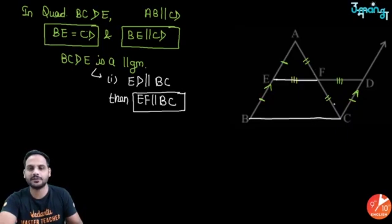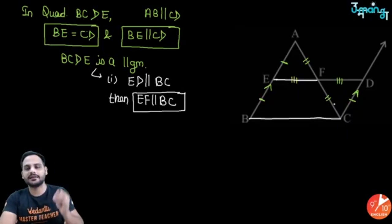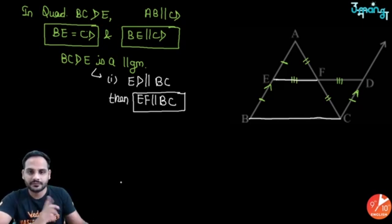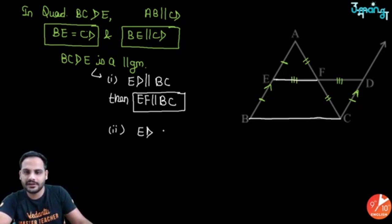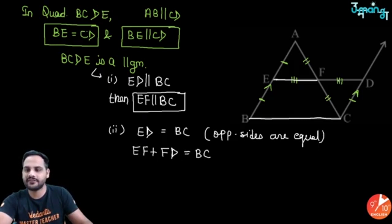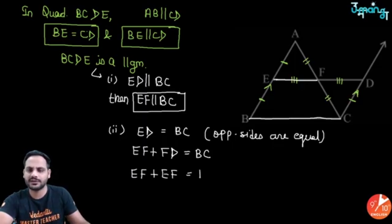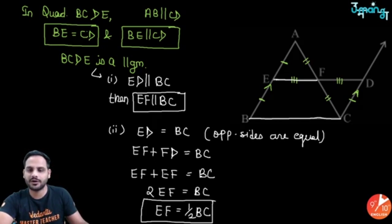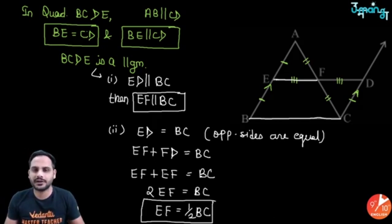For the second result: since BCDE is a parallelogram, ED = BC. Now ED = EF + FD, and since EF = FD, we get 2EF = BC, so EF = ½BC. Both results are proved — hence proved.